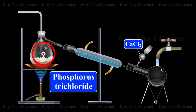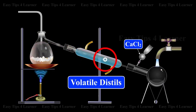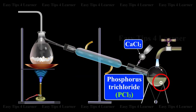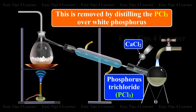The phosphorus trichloride formed, being volatile, distills over and is collected in a water-cooled receiver. The phosphorus trichloride obtained as above contains some phosphorus pentachloride as impurity. This is removed by distilling the PCL3 over white phosphorus.